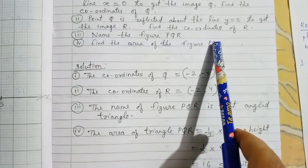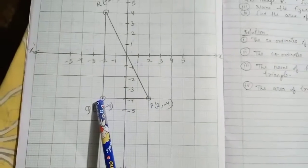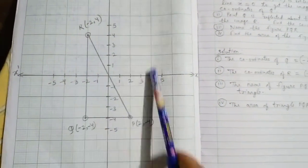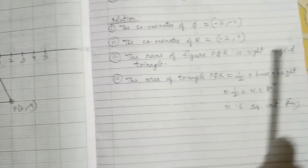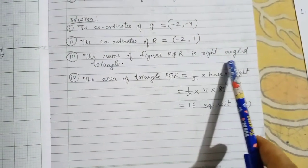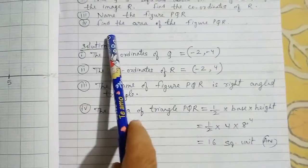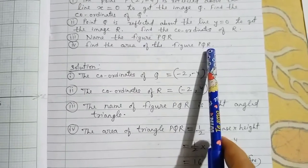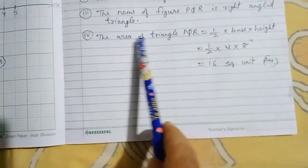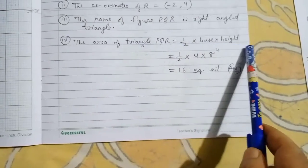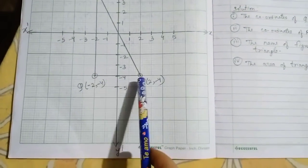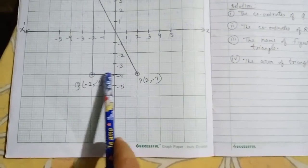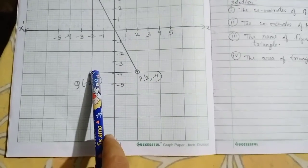Question: Name the figure PQR. Join P to Q, Q to R, and R to P. The figure formed is a right-angled triangle. Find the area of triangle PQR using: Area = ½ × base × height. One box equals one centimeter.